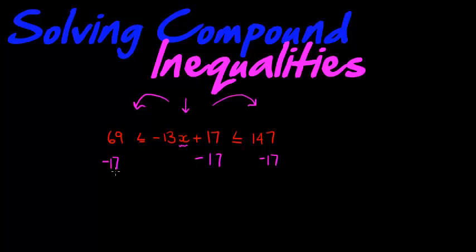And the new answer we get: 69 minus 17 is 42. 42 is smaller than or equal to negative 13x, smaller than or equal to 130.